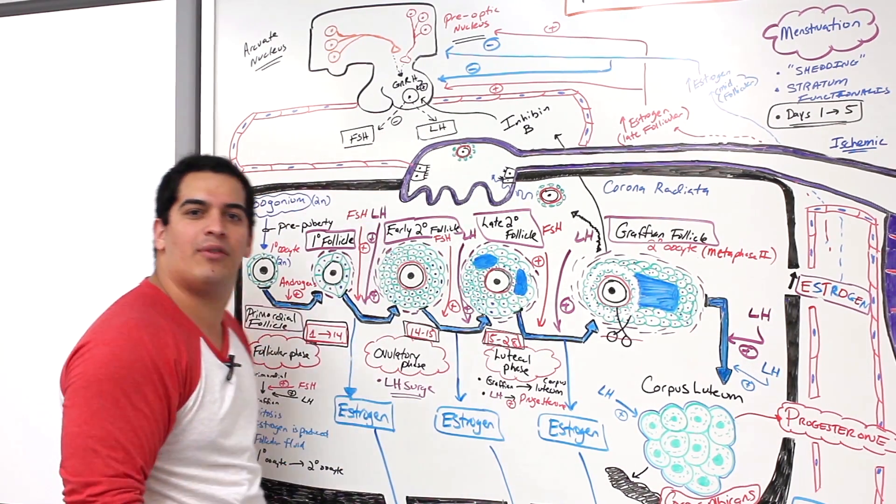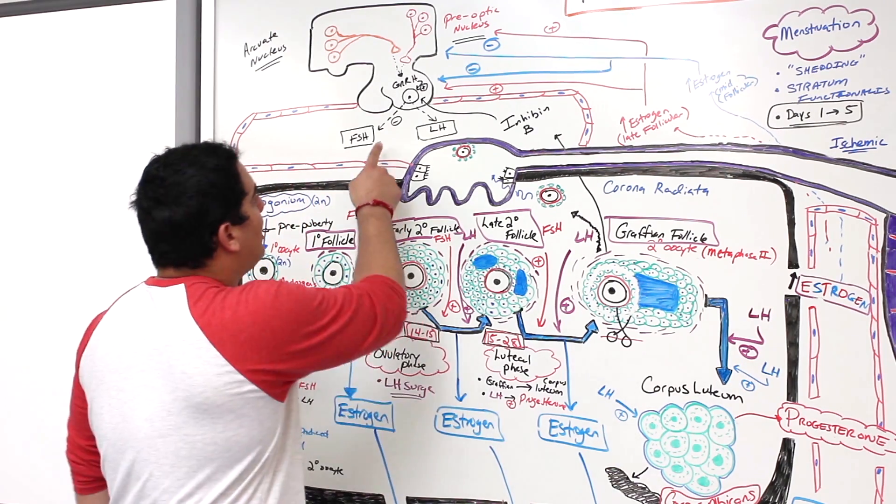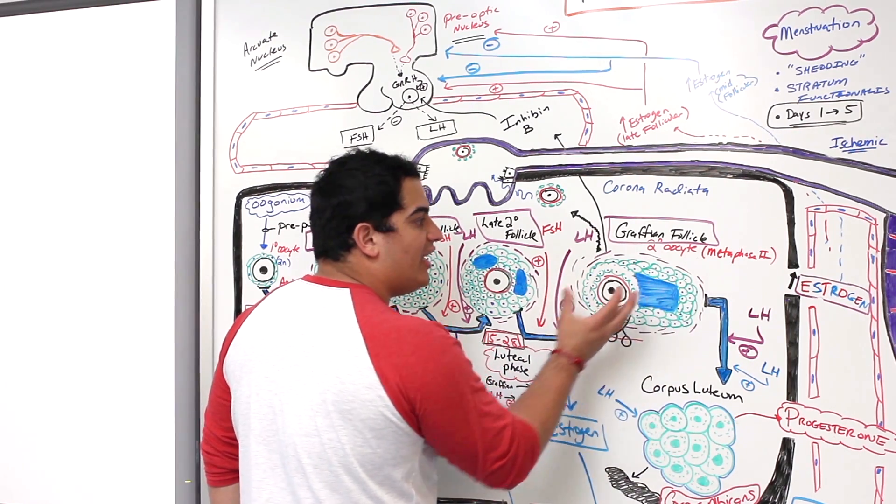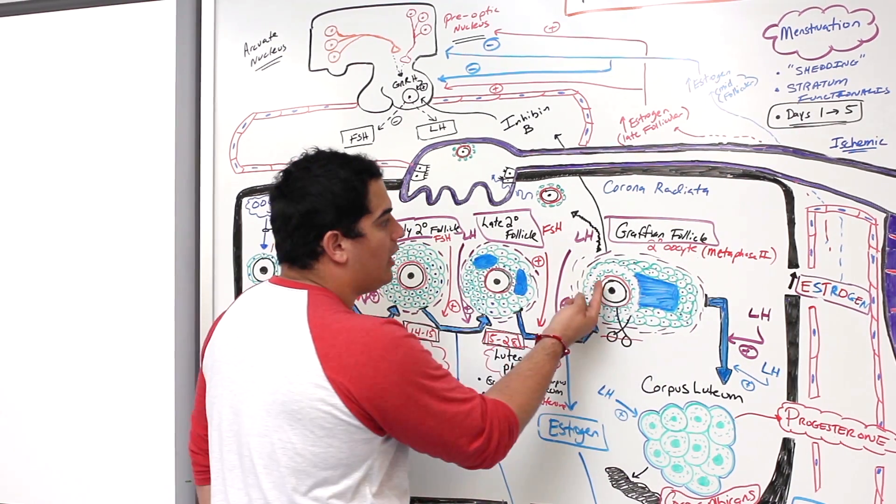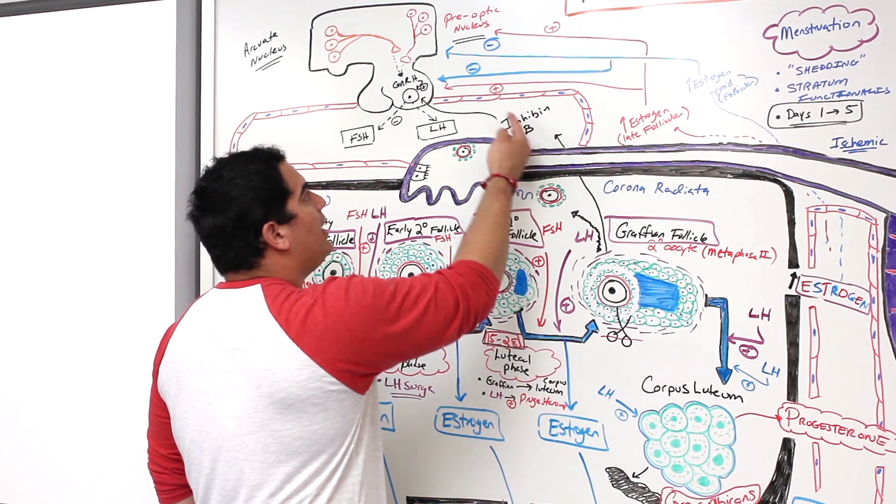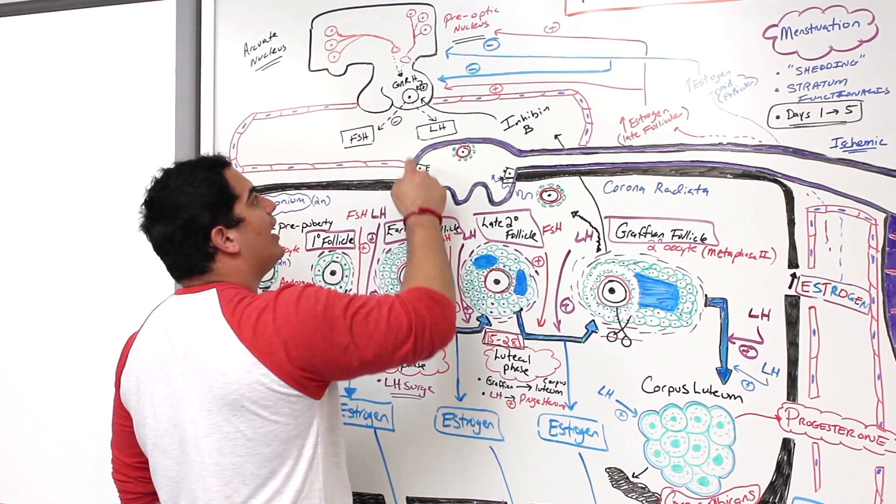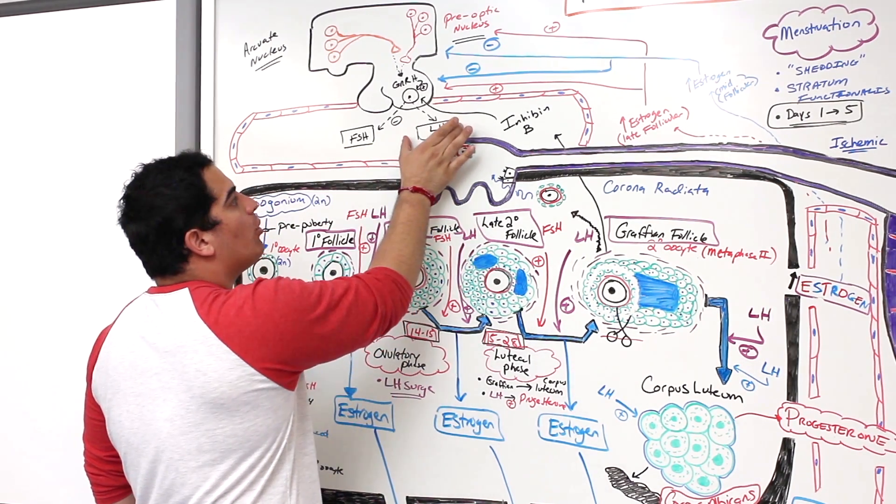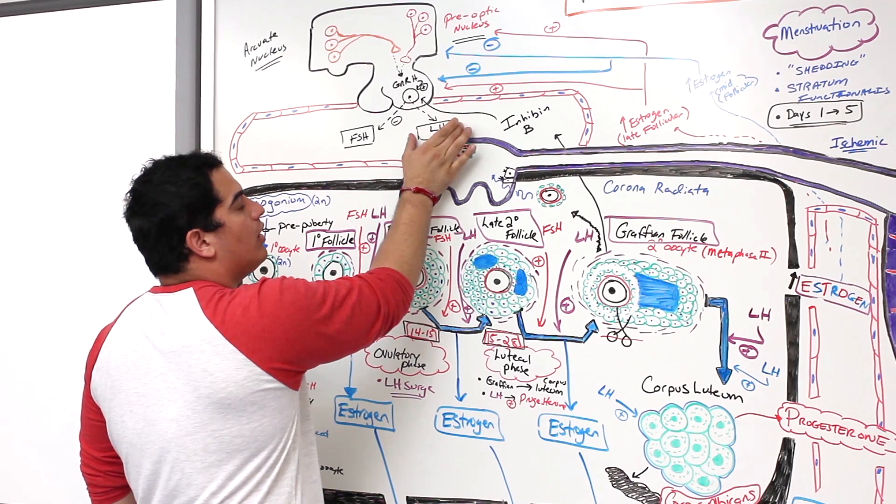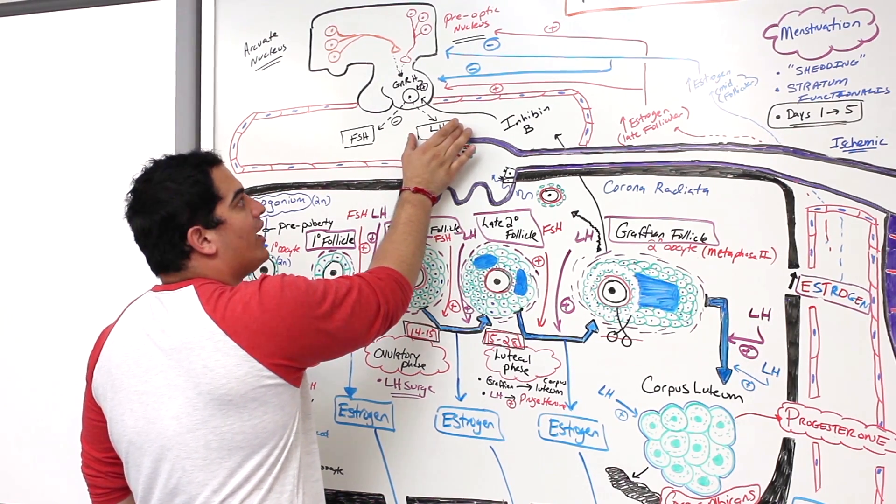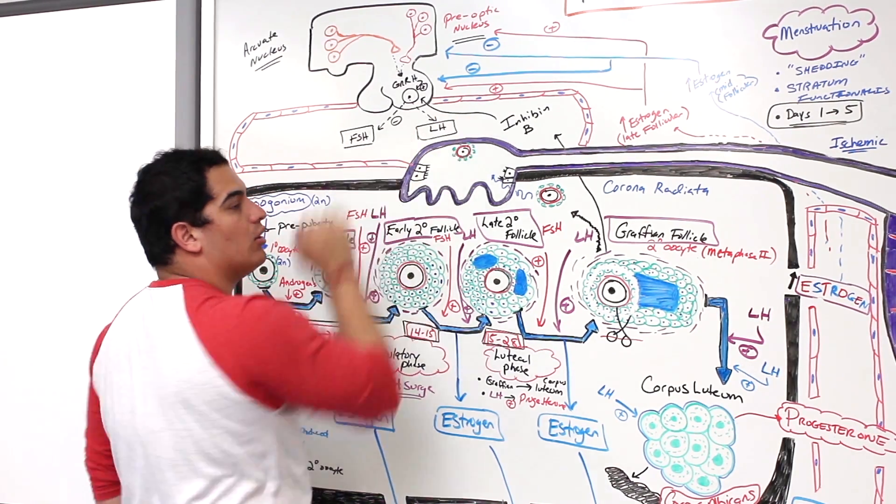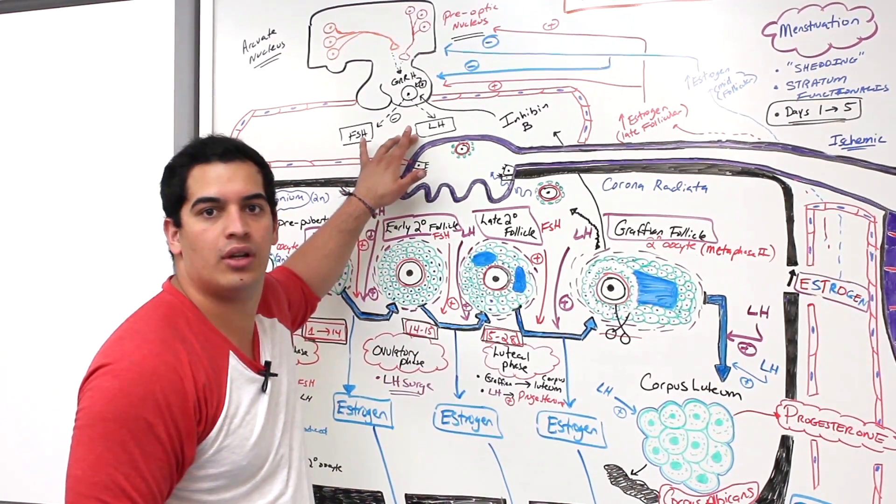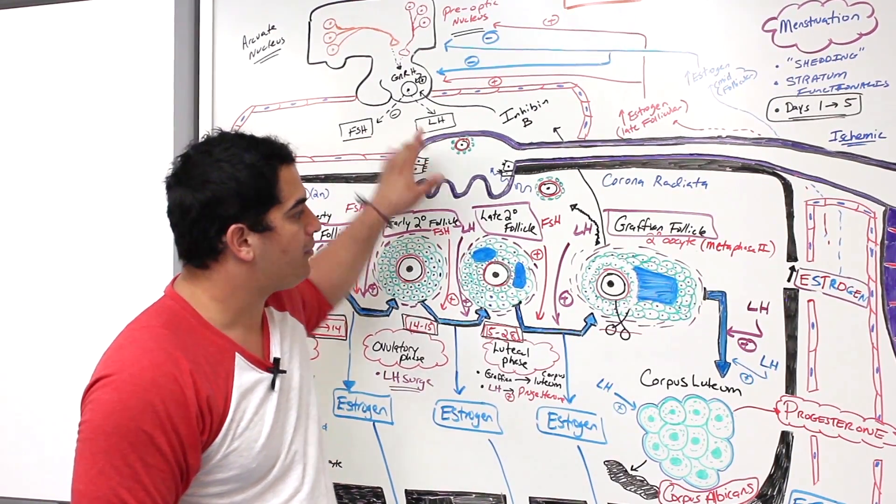If you noticed, FSH is actually going to be inhibited, so we're not even going to really release FSH. Who's inhibiting this FSH? The graafian follicle. As the graafian follicle is nearing day 14, it releases inhibin B, and inhibin B comes to the anterior pituitary and shuts off the production of FSH. That way, the only hormone being produced around the mid-follicular phase going into ovulatory phase is luteinizing hormone, and you make so much LH that they call it the LH surge.